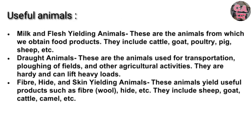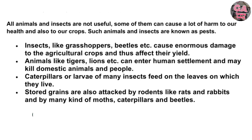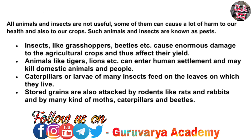Useful animals: Milk and flesh-yielding animals — these are animals from which we obtain food products, including cattle, goat, poultry, pig, sheep, etc. Draft animals — used for transportation, plowing of fields, and other agricultural activities; they are hardy and can lift heavy loads. Fiber, hide, and skin-yielding animals — yield useful products such as fiber, hide, etc., including sheep, goat, cattle, camel, etc.